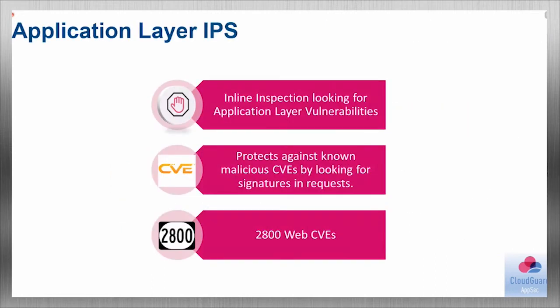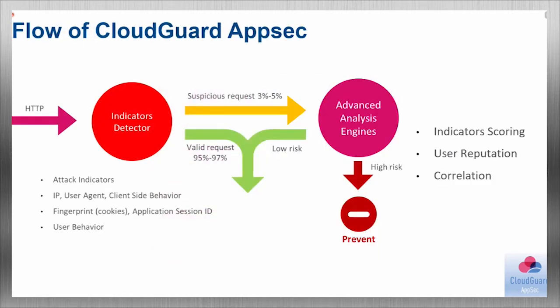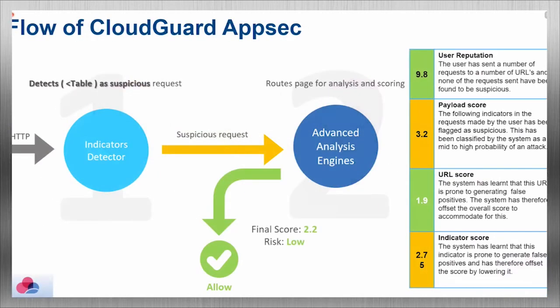Checkpoint WAF includes an intrusion prevention system (IPS) that automatically searches for vulnerabilities in your application and web server, protecting against known vulnerabilities including over 2000 known web service vulnerabilities. Technically, every HTTP query is categorized based on rules, users, and applications. Malicious attempts — about five percent or less — are sent to be analyzed by artificial intelligence where the query is scored, the visitor is risk-assessed, the complete event is correlated, and based on the results the request is blocked or accepted.